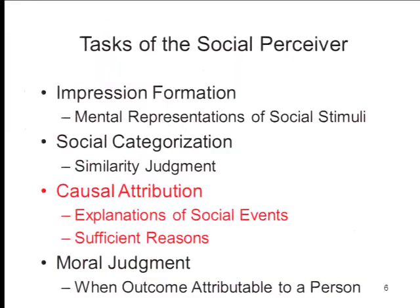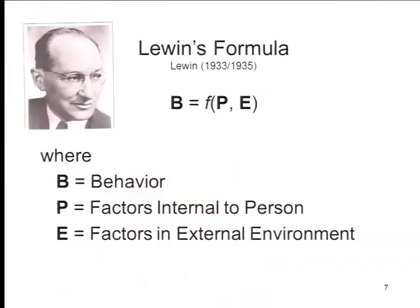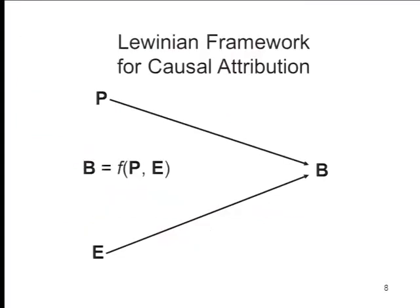The basic foundation for all studies of causal attribution begins with our old friend Kurt Lewin, who gave us the grand truism that behavior is a function of something about the person and something about the situation. That is basically a way for scientists — and also for the ordinary person on the street — to think about the causes of social behavior. You've got some behavior that occurs as a function either of something about the person or something about the situation.